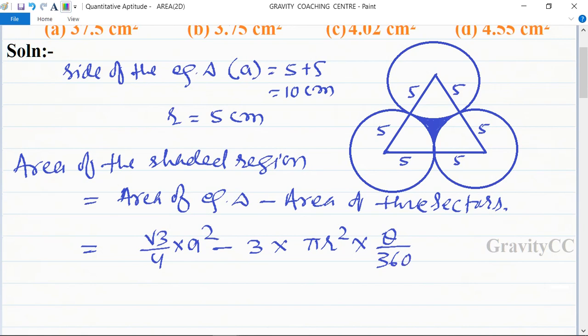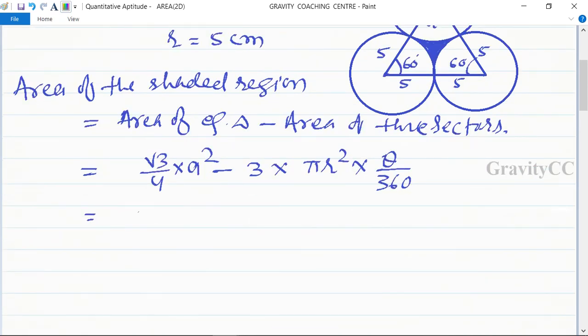In an equilateral triangle, each angle is 60 degrees, so theta value is 60. This equals root 3 by 4 into 100 minus 3 into 22 upon 7 into 25 into 60 upon 360.